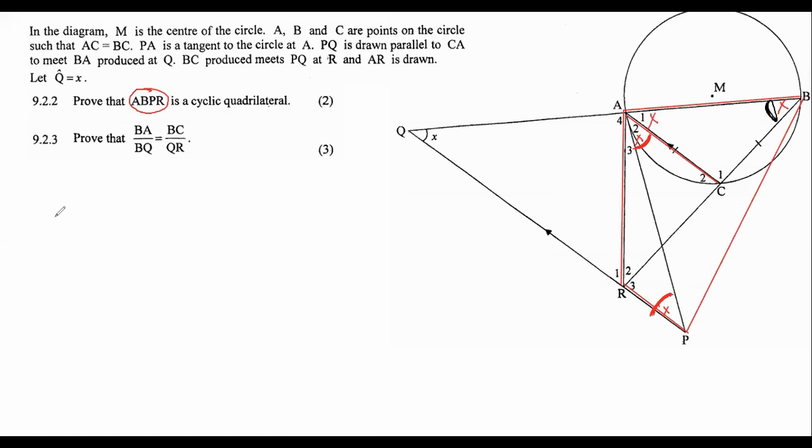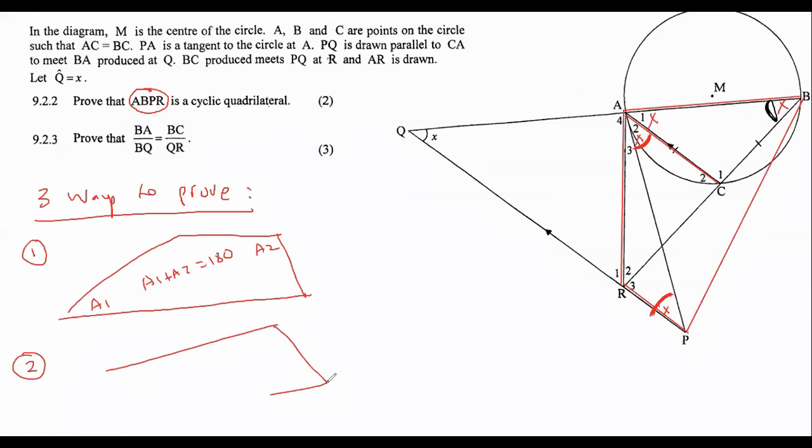Now there are three ways to prove that something is a cyclic quad. Three ways to prove. The first one is the following. Number one, if you have a cyclic quadrilateral that looks something like this, then the opposite angles, if this is A1 and this is A2, we know that A1 plus A2 must be equal to 180. That is one way to prove it. The second way to prove it is to have an exterior angle, and that exterior angle must be the same as the opposite interior angle. So if this is A1 and this is A2, then A1 must be equal to A2.